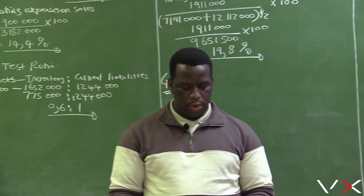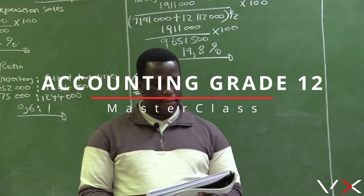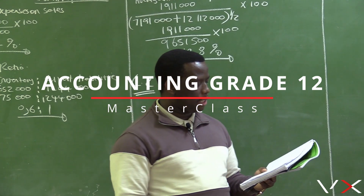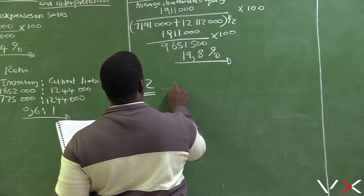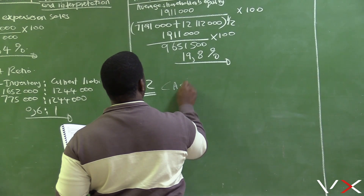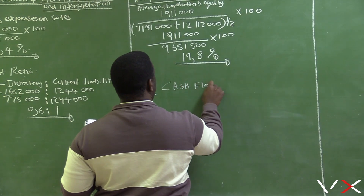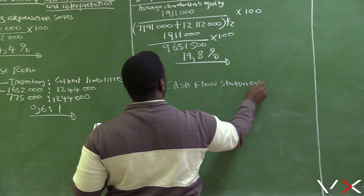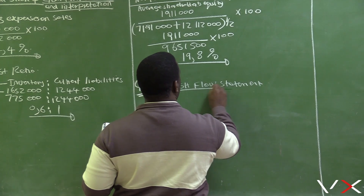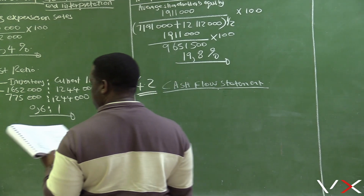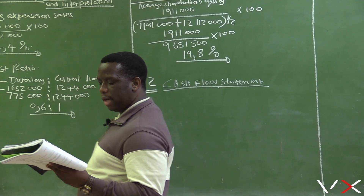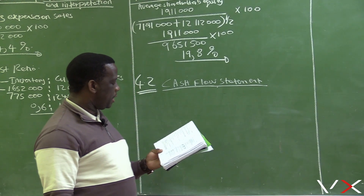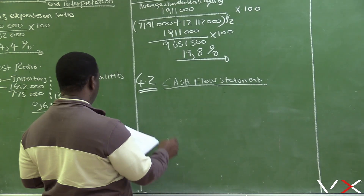For question 4.2, we want to calculate the following figures that will appear in the cash flow statement for 2018. We are now doing the cash flow statement, but these are just calculations.